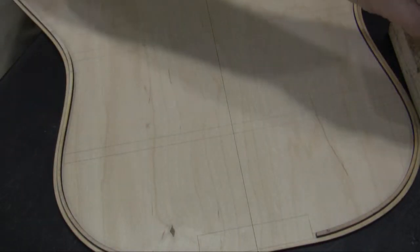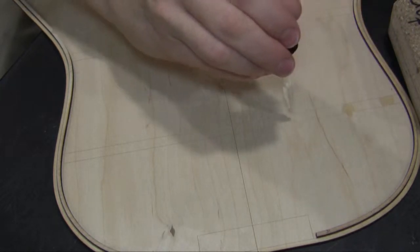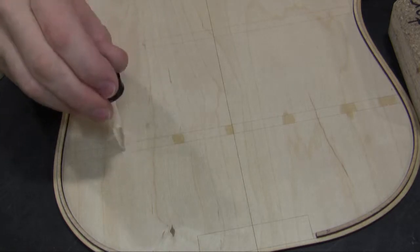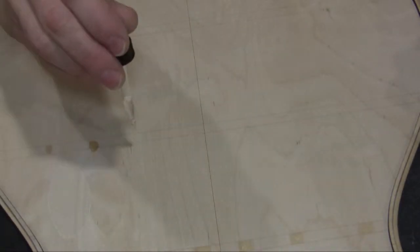Get some accelerator and put little dabs about every two or three inches along the brace. In particular, make sure you get the very end of the brace, and then continue your way across the back.